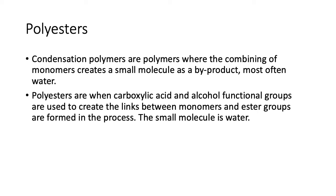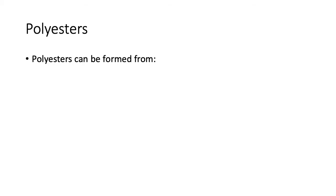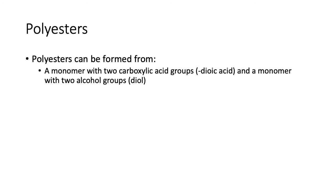Polyesters are formed when carboxylic acid and alcohol functional groups are used to create links between monomers, and ester groups are formed in the process. A carboxylic acid and an alcohol combine to form an ester group, creating really long chains when many of these are joined together. The small molecule released is water. And just so you know — esters are fruity, but polyesters are not fruity.